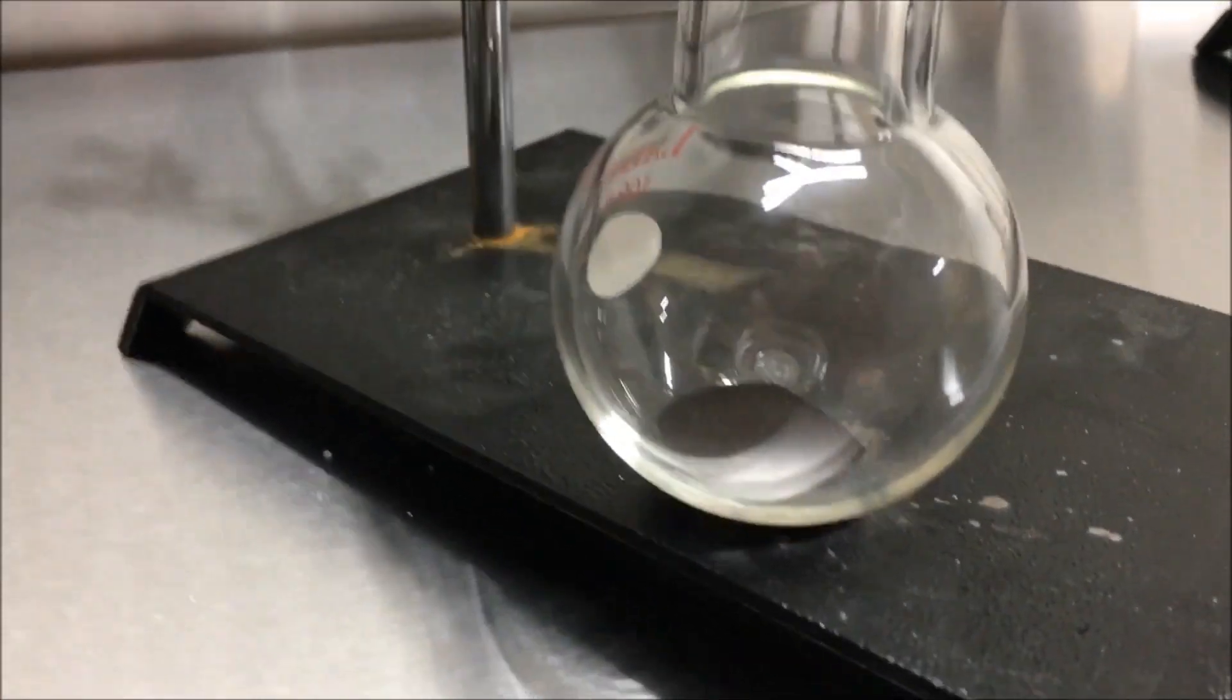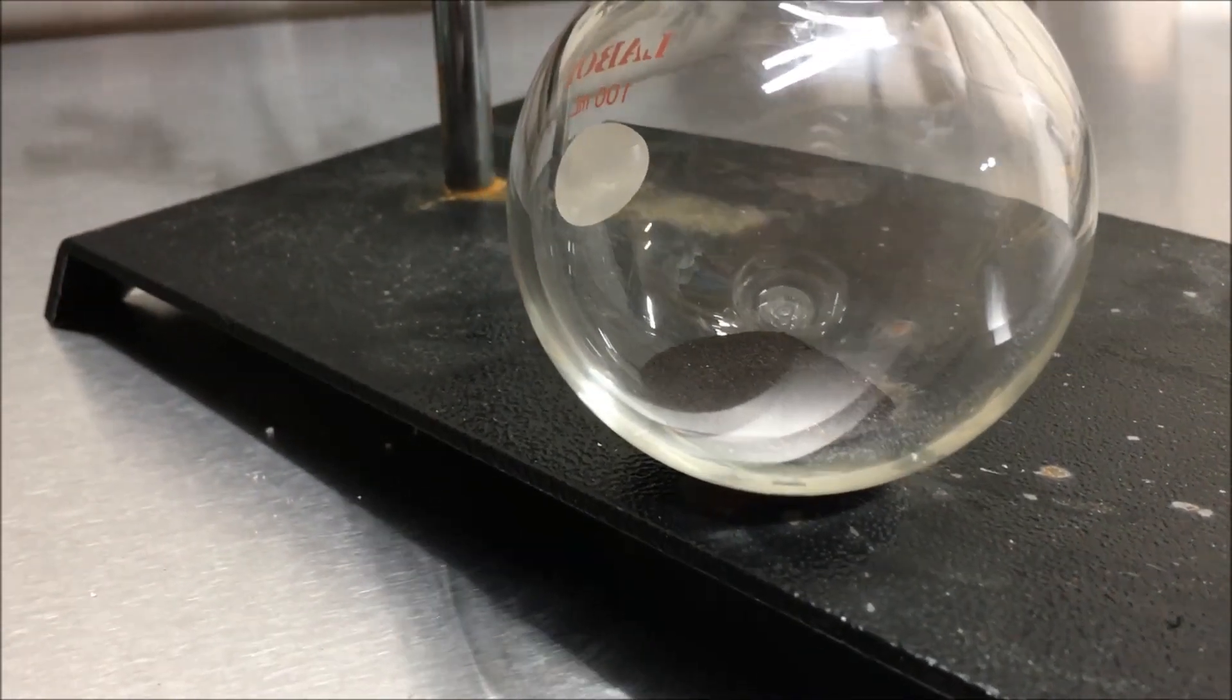Okay, here we go. I'll slowly drip in the hydrogen peroxide into the potassium permanganate.